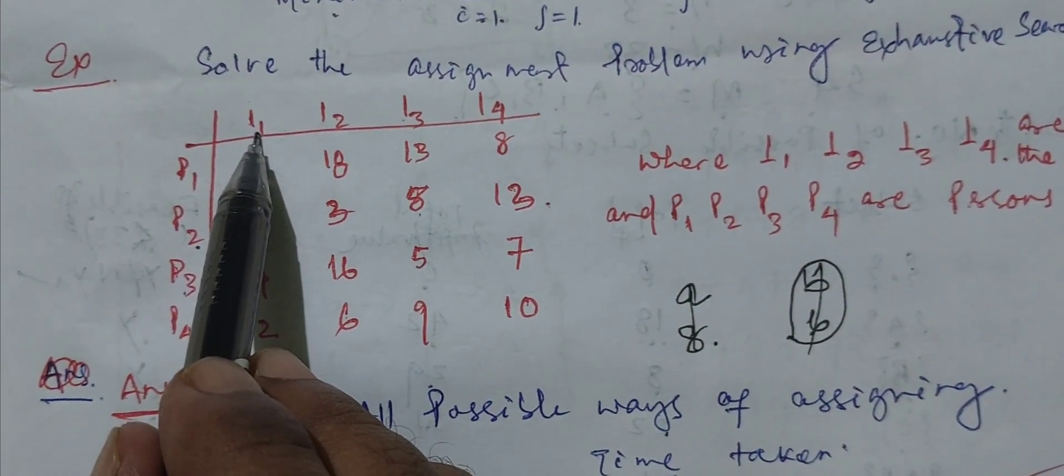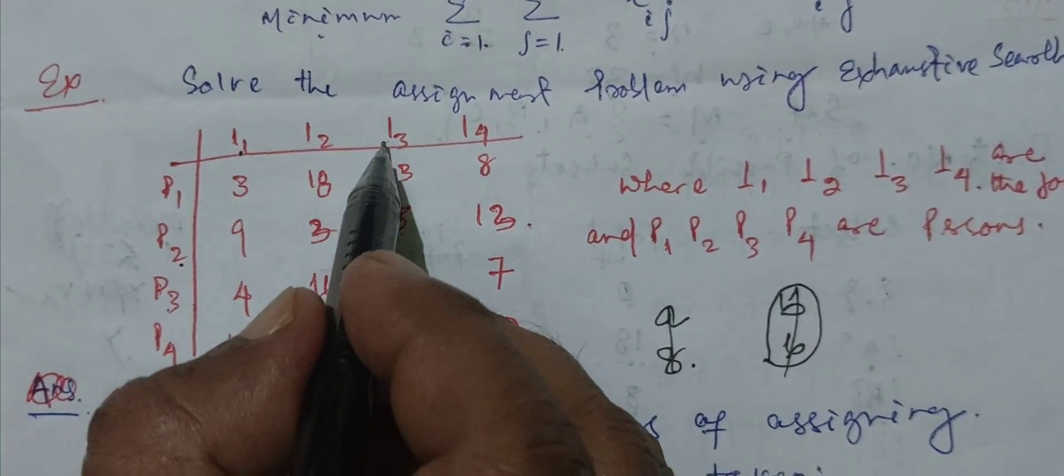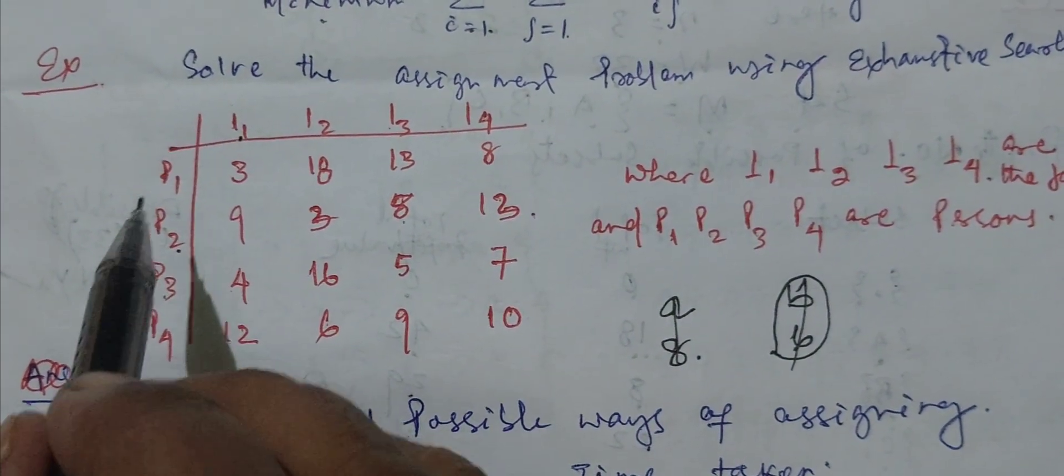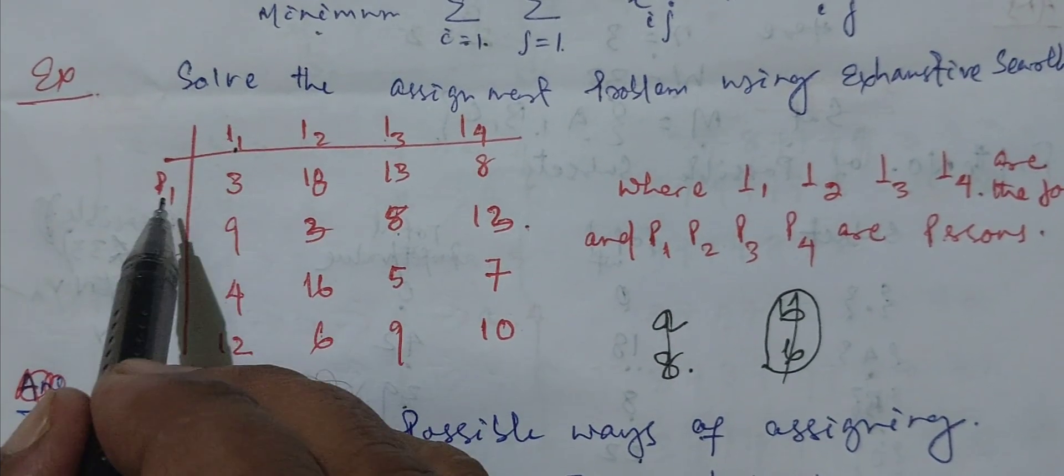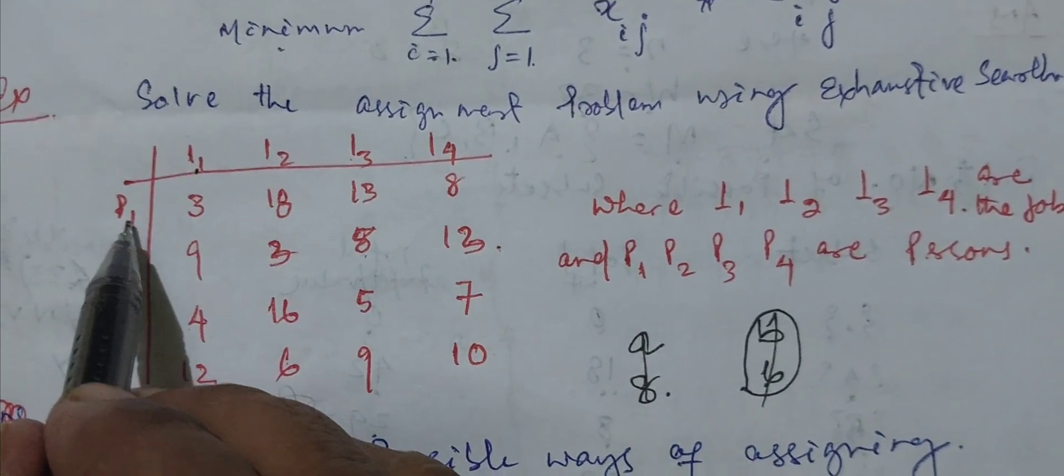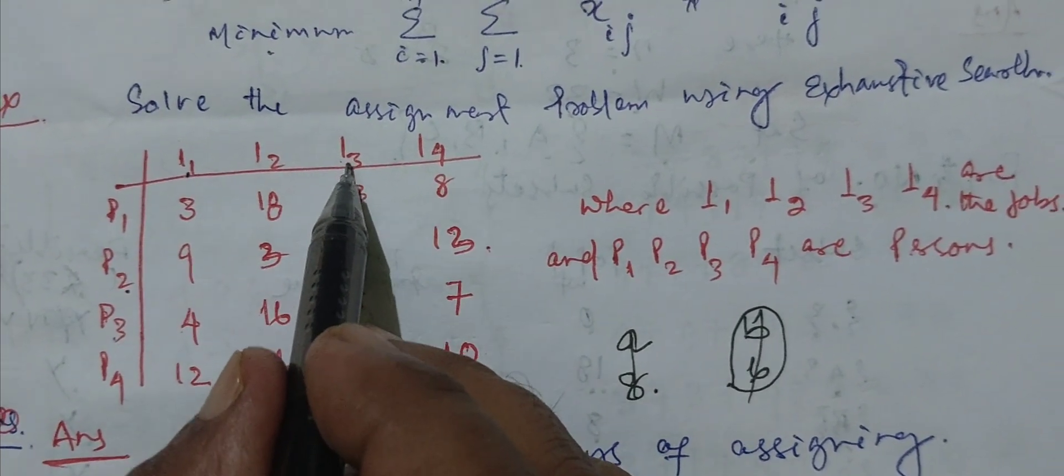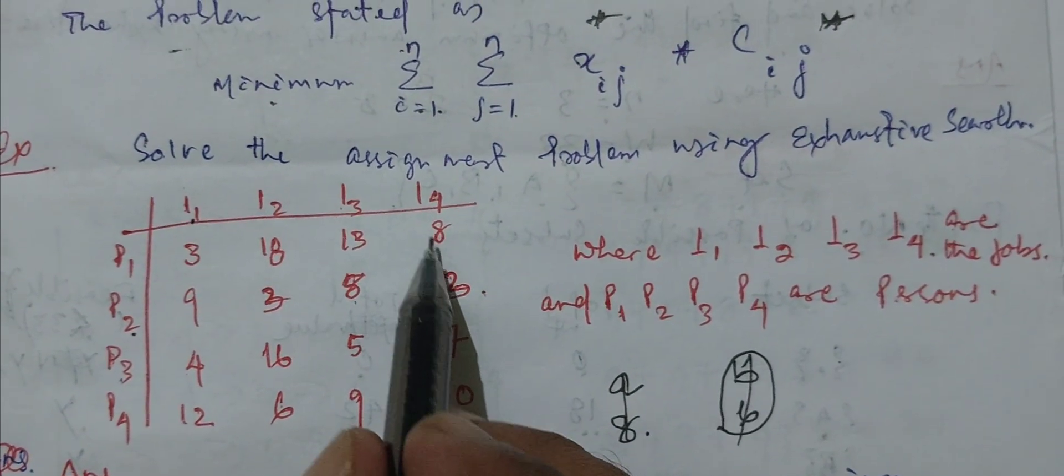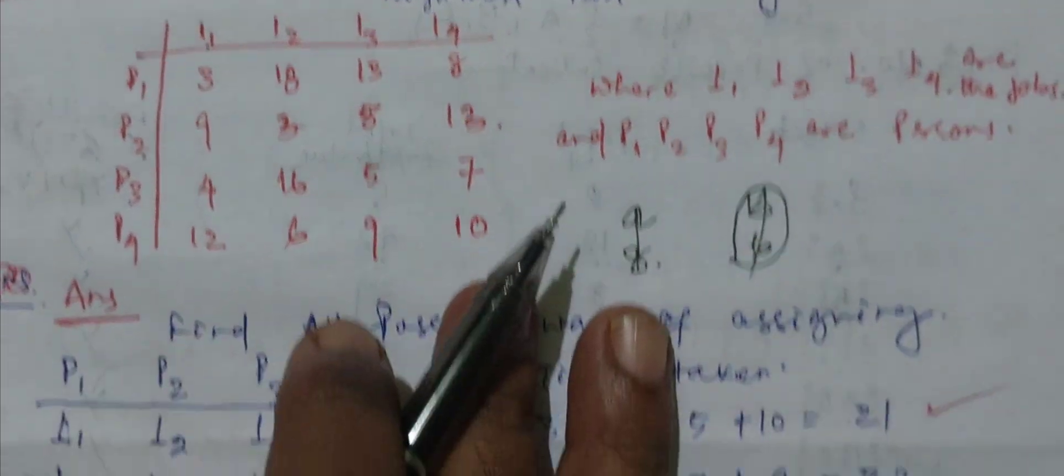These are the items, that means jobs: job 1, job 2, job 3, job 4. These are the persons: person 1, person 2, person 3, person 4. Person 1 takes 3 days to complete job 1, 18 days to complete job 2, 13 days to complete job 3, and 8 days to complete job 4. Similarly, this is the table given and we have to complete it.